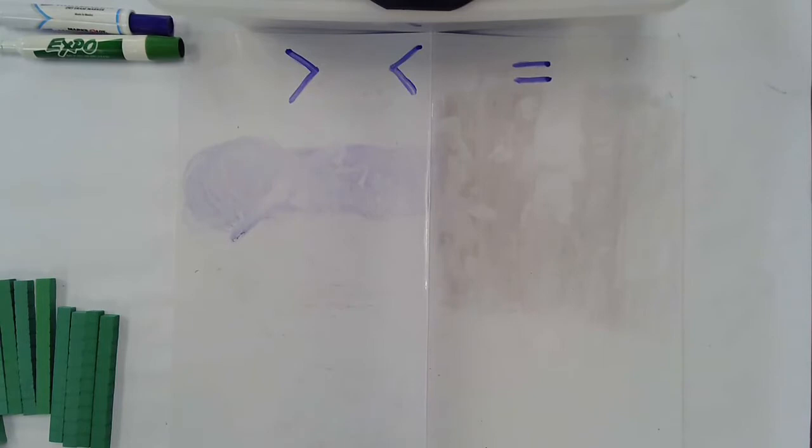Today for our math strategies video we're going to be talking about comparing numbers. We're going to be using place value blocks to help us compare two-digit numbers.